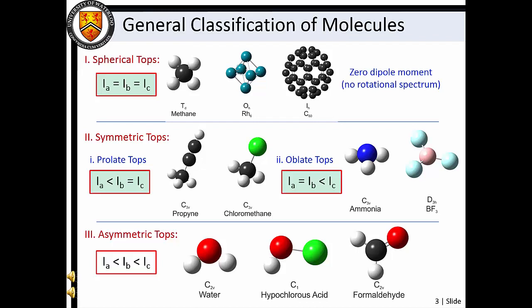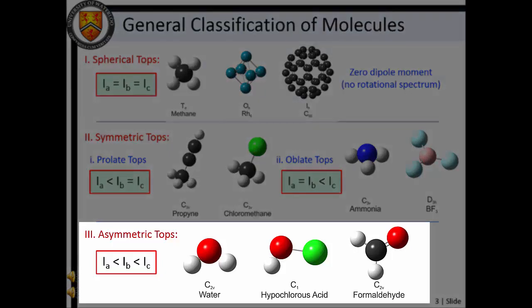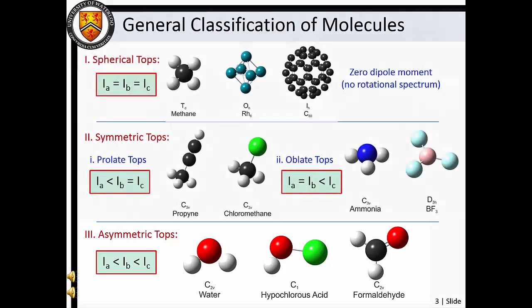Most molecules are asymmetric tops wherein all three moments of inertia are different. In some cases, like water or formaldehyde, we find that two of the moments of inertia have nearly the same value. Such species are referred to as near-prolate or near-oblate symmetric tops. In general, there is no simple analytical form for the rotational energy levels of asymmetric top molecules.